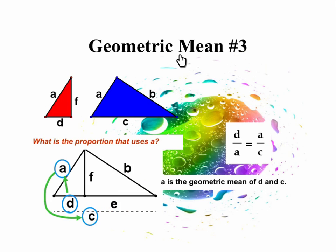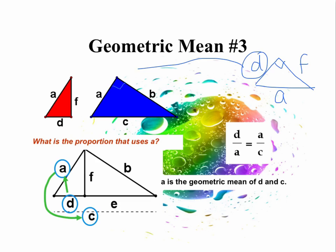Here is the last geometric mean, which is number three — we're looking at the red and the blue triangles. If I take the red and rotate it the same way as the blue, this would be 90 degrees and this is 90 degrees. Side A would be here, side D would be here, and side F would be here. So D over A is the same thing as A over C. And if I look at the larger picture of the right triangle, D over A is equal to A over C. A is the geometric mean of D and C. This all ties in with geometric sequences and similar triangles and right triangles.